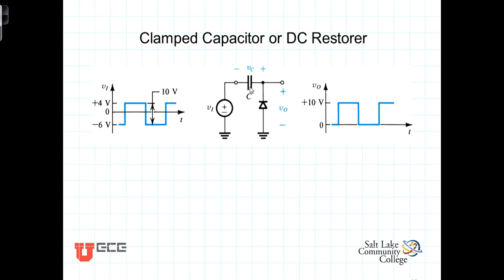Capacitor. Let's take a look at it. The diode conducts only when the input is negative and you'll have current flowing in this direction, establishing voltage across this capacitor, plus to minus.